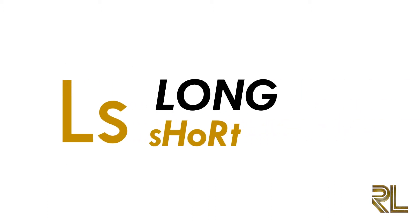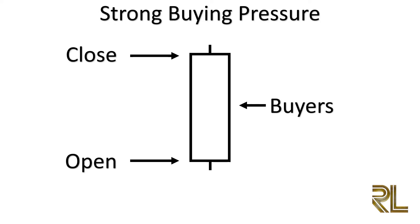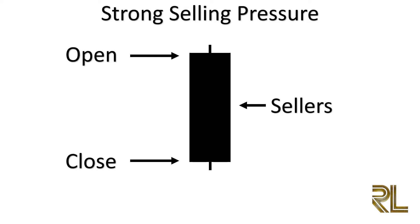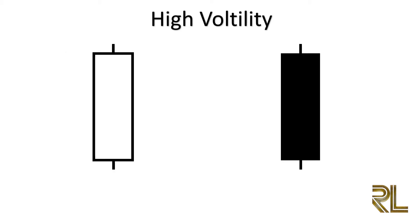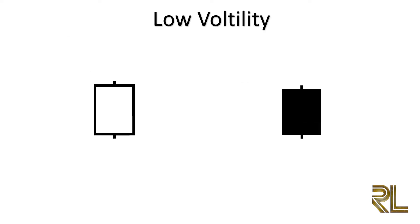Candlesticks have different body sizes — long and short. Long bodies refer to strong buying or selling pressure. If there is a candlestick where the close is above the open with a long body, this indicates that buyers are stronger and taking control of the market. Conversely, a bearish candlestick with a long body means selling pressure controls the market. A long candle also signifies high market volatility. Short and small bodies indicate little buying or selling activity and low market volatility.